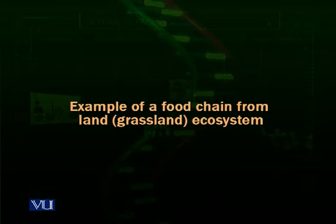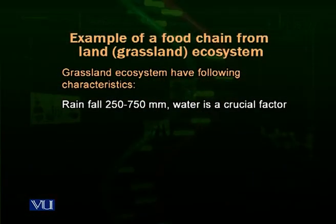Grasslands — we can call them vast areas on which grass or grass-like plants exist, also called Kudrti Chara Gaheen. The grassland ecosystem has some characteristics. Rainfall in these ecosystems is from 250 to 750 millimeters annually, which is not sufficient. As a result, water is a crucial limiting factor that limits life, since only plants and animals that can conserve water and survive on smaller quantities can grow here.